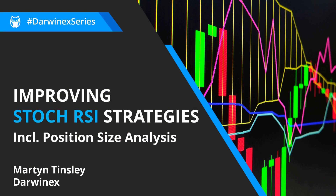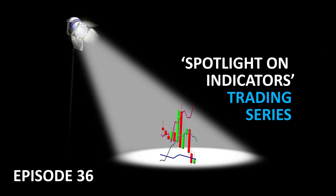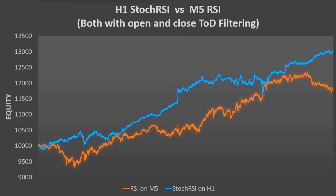Welcome back. This is episode 36 in the Spotlight on Indicators trading series, and if you're joining us for the first time, you can find a link to the entire series in the video description. This is where we got to last time. The orange equity curve represents the simple RSI strategy that we implemented, and the blue curve is the stochastic RSI. We used different time frames for each because of the frequency with which they traded — the stochastic RSI produced many more trades than RSI.